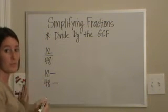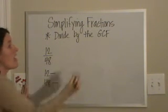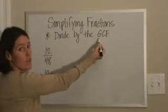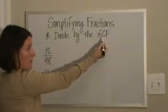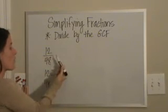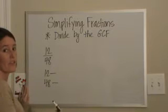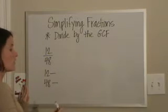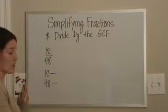Factors are numbers that you multiply to get a product. A greatest common factor is the largest factor they have in common. If you have the fraction 12/48, you want to find the greatest common factor between the two. You start by listing the factors.